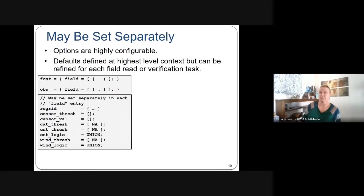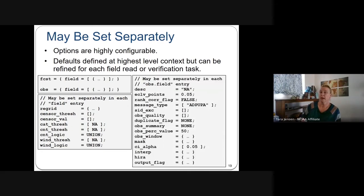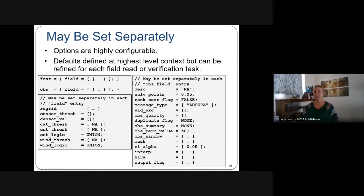Several options can be set for both forecast and observation fields together, or separately. If you want very specific settings per observation — like different OBS quality flags for different observations even in the same PointStat run — you can specify a different dictionary for each field.